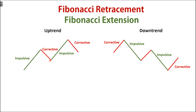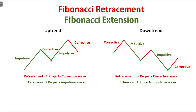Therefore, on an uptrend, the Fibonacci retracement tool projects the price range where the corrective wave is going to reach, based on the previous impulsive wave. And the extension tool is used to project where the next impulsive wave will bring us to, based on the previous impulsive wave and the corrective wave. On a downtrend, the retracement tool still projects for the corrective wave, and the extension tool projects for the impulsive wave — but the directions of these waves are opposite.